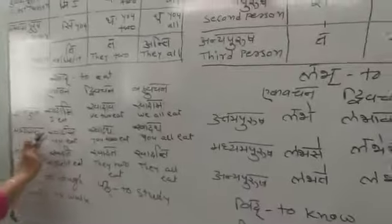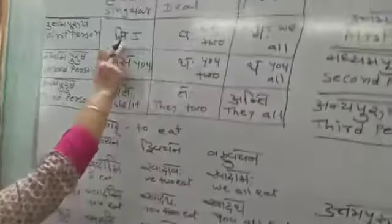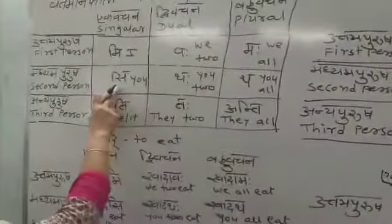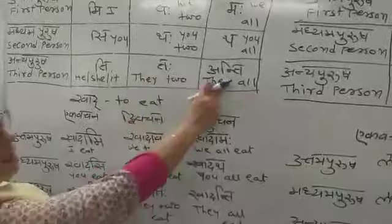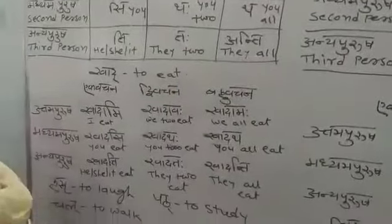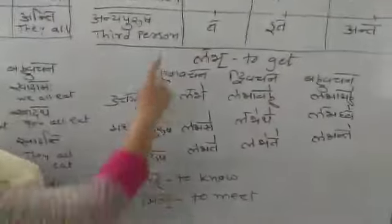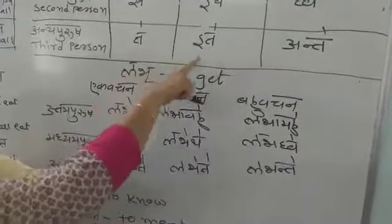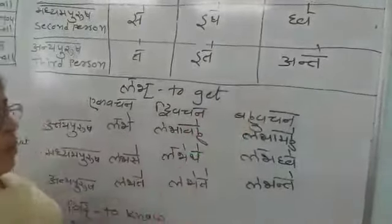Just as with 'has': hasami, hasavah, hasamah; hasasi, hasathah, hasatha; hasati, hasatah, hasanti. And for 'vid' in Atmanepada: vidye, vidyavahe, vidyamahe; vidyase, vidyethe, vidyadhve; vidyate, vidyete, vidyante.